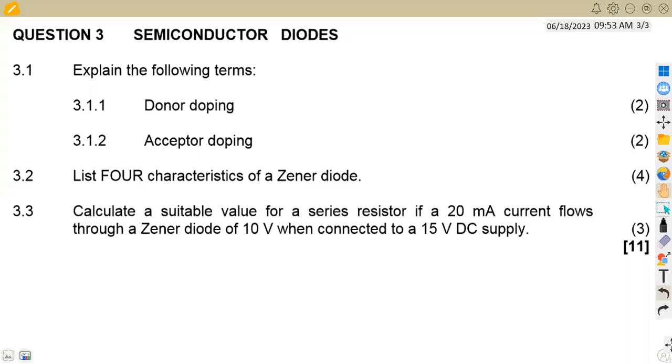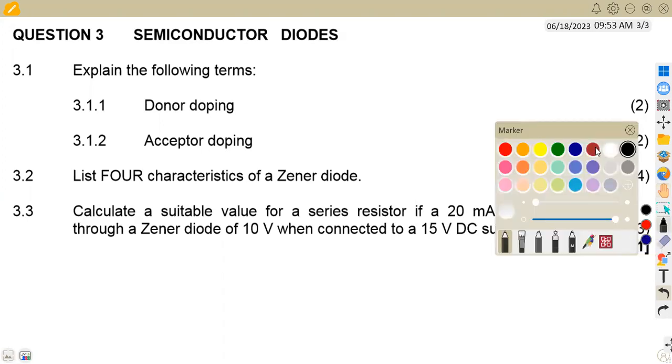Hello guys, welcome back to Mason African Motives, still on Industrial Electronics N4, working on semiconductor diodes. In this case, we've got the question paper from August 2018, where we are given a simple question that we are going to focus on for our revisions.